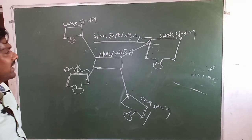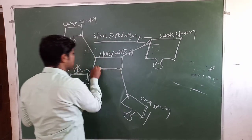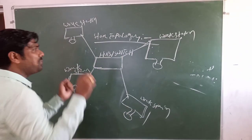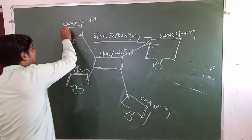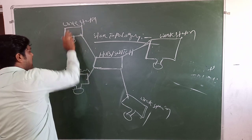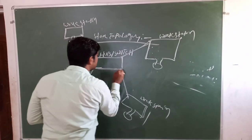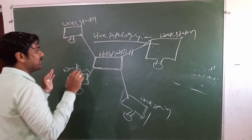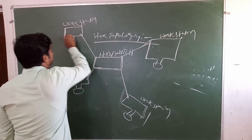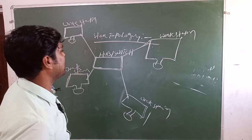Every computer and workstation is connected to the main central hub and switch. Star topology is one of the most popular topologies, meaning every computer or node is wired simultaneously at the same time. All computers are connected at once by the help of a hub or switch, which plays an important role in star topology.